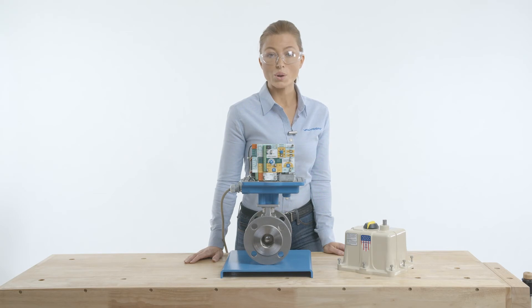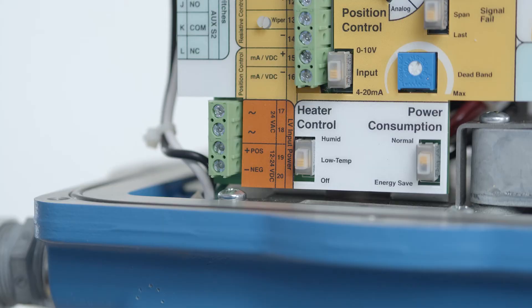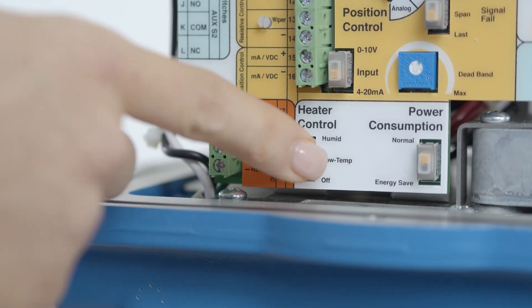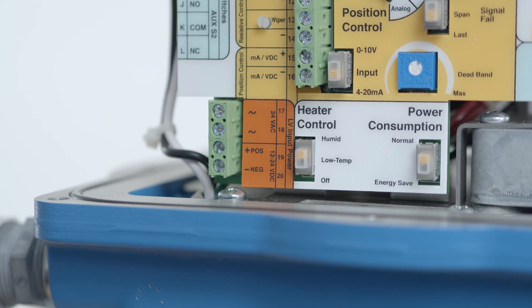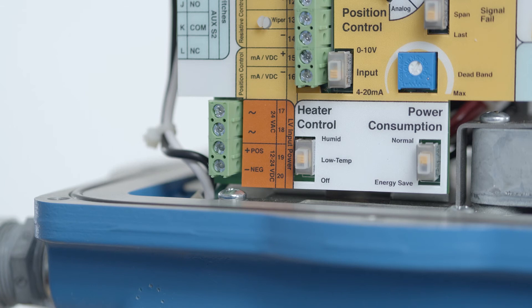ADC series actuators are equipped with the heater thermostat option that is user enabled by sliding a selector switch. Slide the selector all the way up to select humid mode. This will keep the actuator internals warmer and drier in a humid environment or an environment that experiences wide temperature swings. Slide the selector to the middle position to select the low temp mode. This will keep the actuator internals warmer in a cold environment but will turn the heater off above approximately 60 degrees Fahrenheit or about 15 degrees Celsius. Finally, the heater can be turned off completely by sliding the selector all the way down.